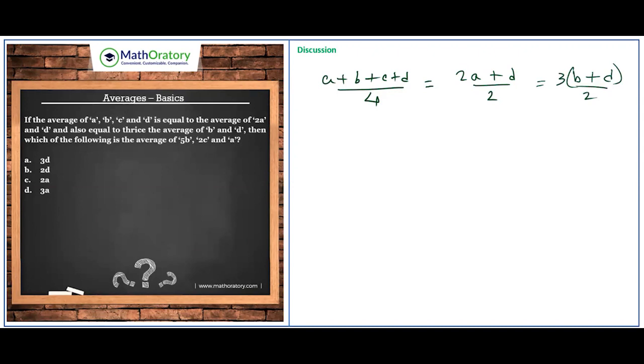And now coming to the objective. What is required here? We are looking for the average of 5B, 2C and A, which is three numbers. So effectively to get this, and I hope you can see the options are in terms of A and D. So in order to figure this out, we need to get the numerator. If I can figure out the numerator, my job is done. So I need to find 5B plus 2C plus A.